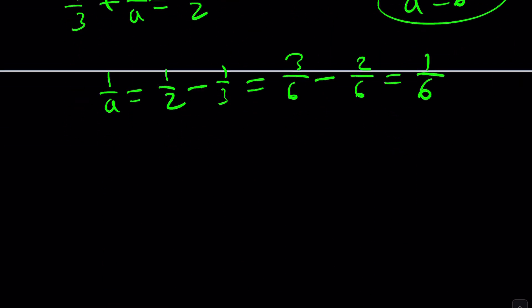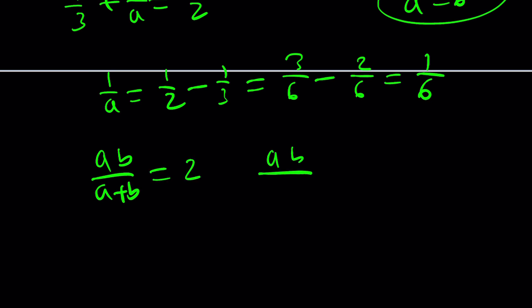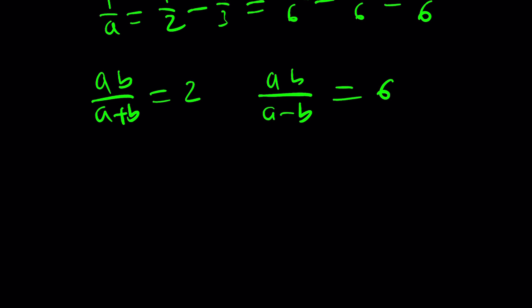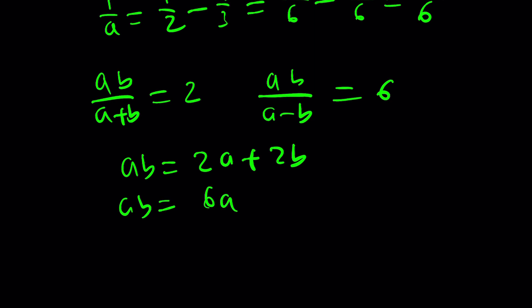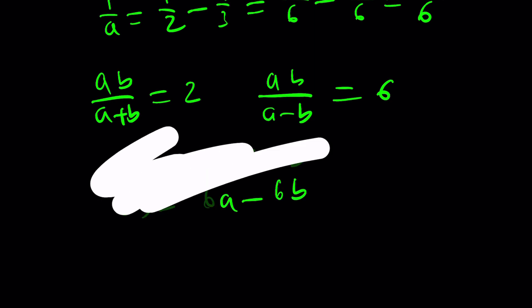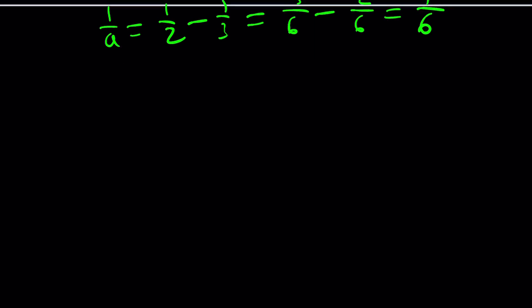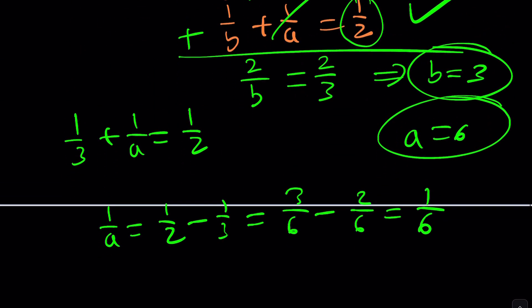What about a third method? I haven't really thought of any other way to do this, but you could probably think of something. Maybe after cross-multiplying, you could try adding the two equations — but I don't think that's going to help a lot. Let me know if there's another way to approach this problem. Thank you for watching. Please comment, like, and subscribe. Don't forget to check out CyberMath and A plus BI. Bye-bye.